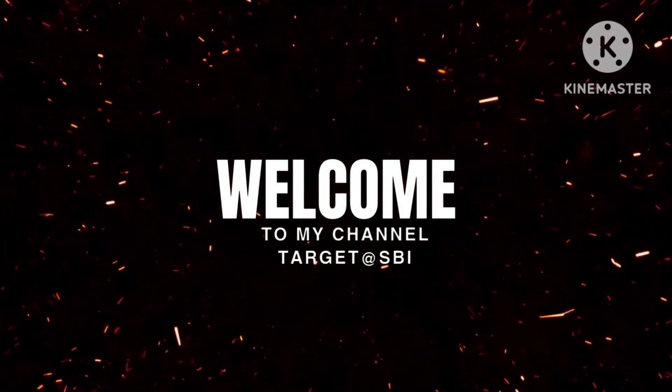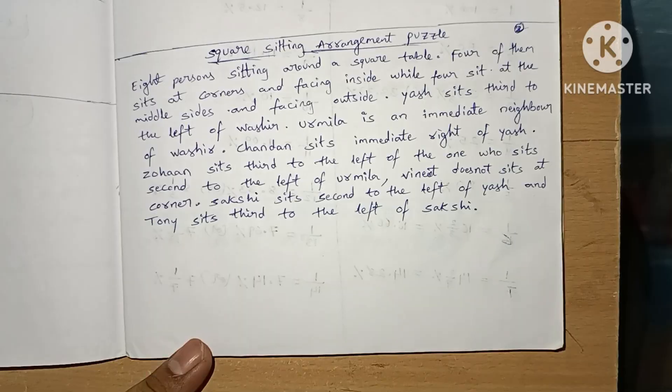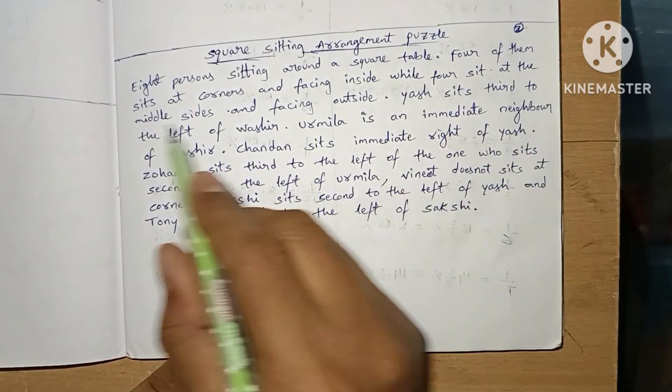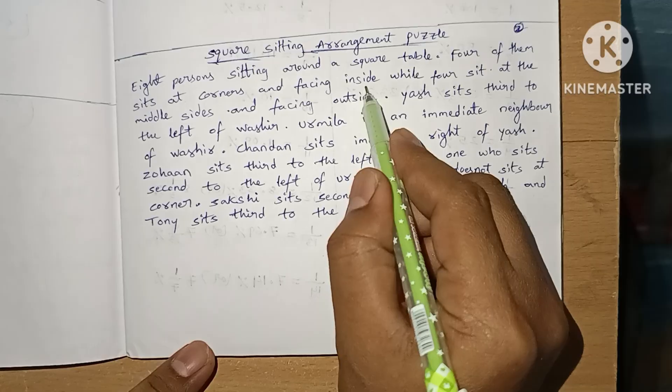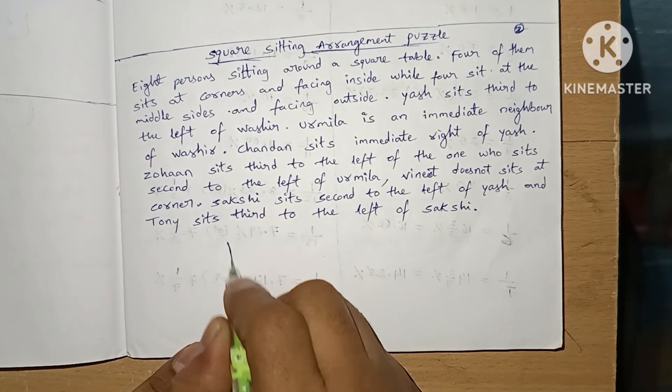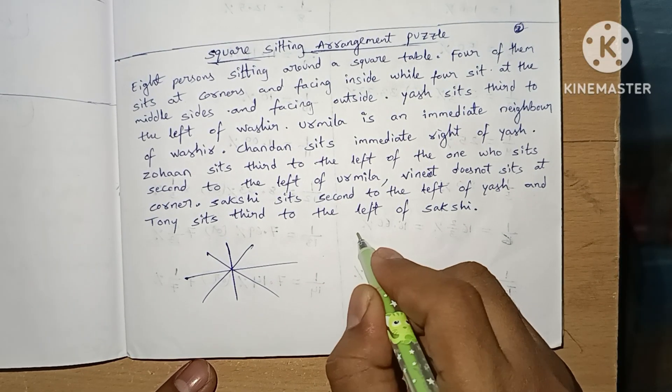Hello guys, welcome back to my YouTube channel Target SBI. Let's solve a square sitting arrangement puzzle. Eight persons are sitting around a square table. Four of them sitting at the corners and facing inside, four sitting at the middle sides and facing outside. So every time I see this one, I draw like this and we note the rough statements in the side.